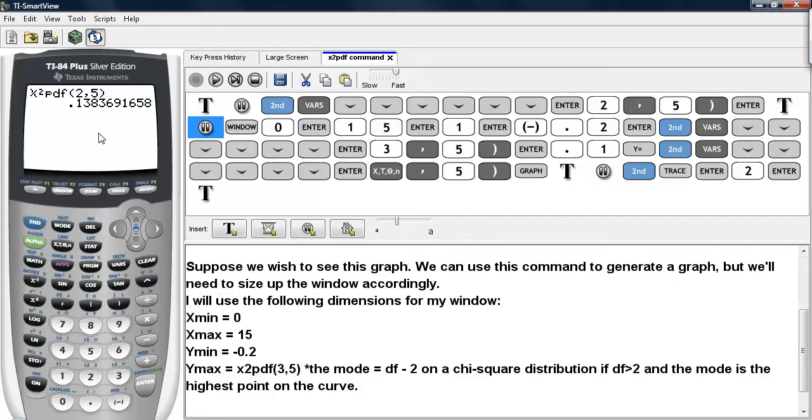We can use the same command to generate a graph, but we will need to size up the window accordingly. So I will use the following dimensions for my window: x-min will be 0, x-max will be 15, y-min will be negative 0.2, and y-max is going to be evaluated at chi-square PDF value of 3 and then comma 5.